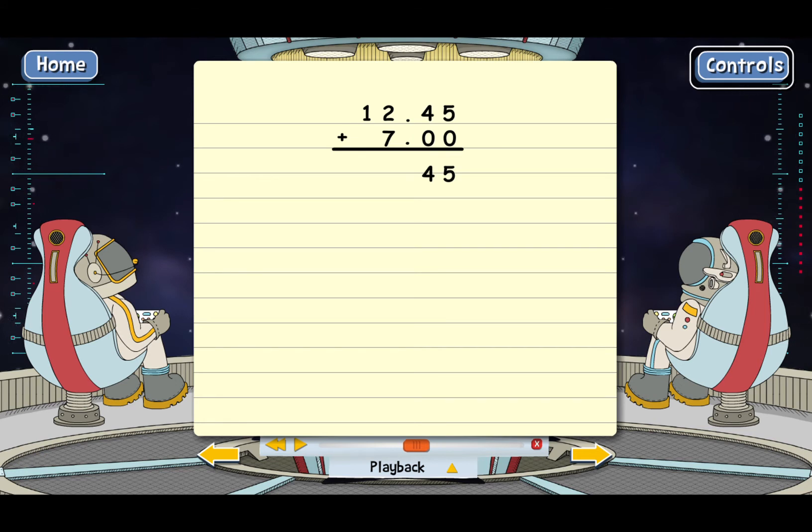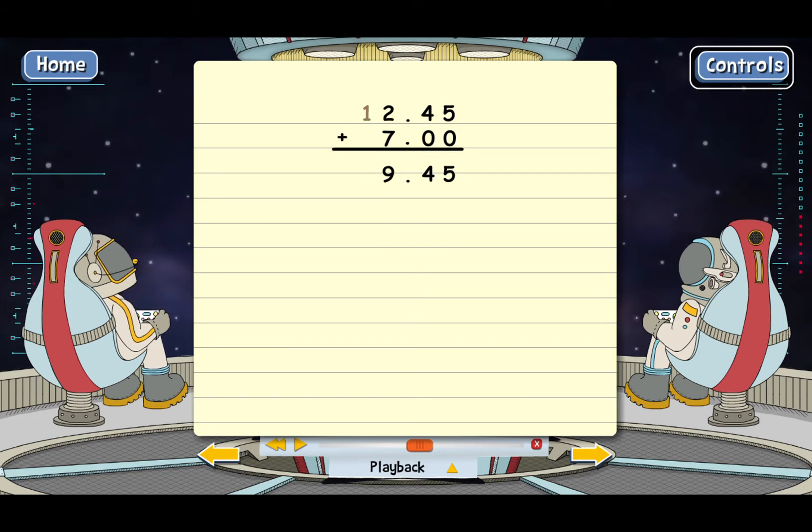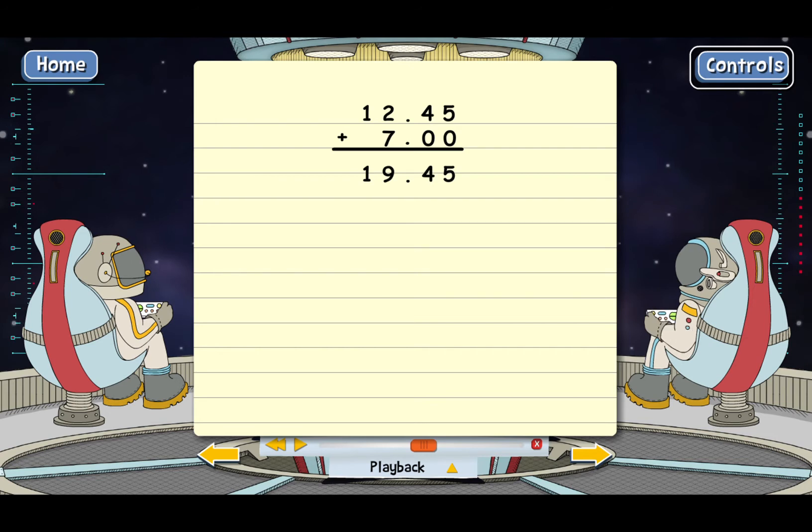And go ahead and do the next column. You got it. Now for the last column. And remember, just think of that blank as a zero. Go ahead. Exactly.